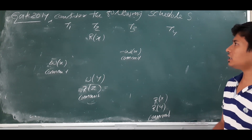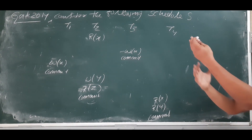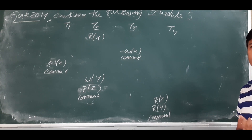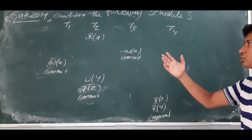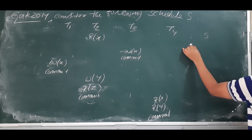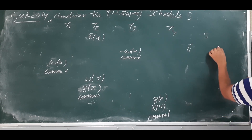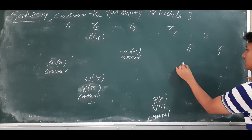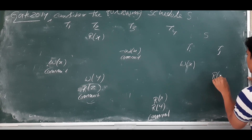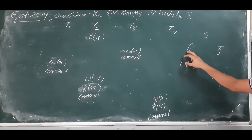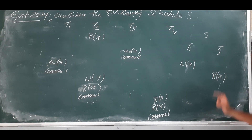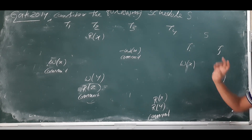First, let me discuss what a recoverable schedule is. Consider a schedule with two transactions Ti and Tj. Transaction Ti is writing some data and transaction Tj is reading the modification that Ti made. So we have Ti writing the data and Tj reading what Ti modified.